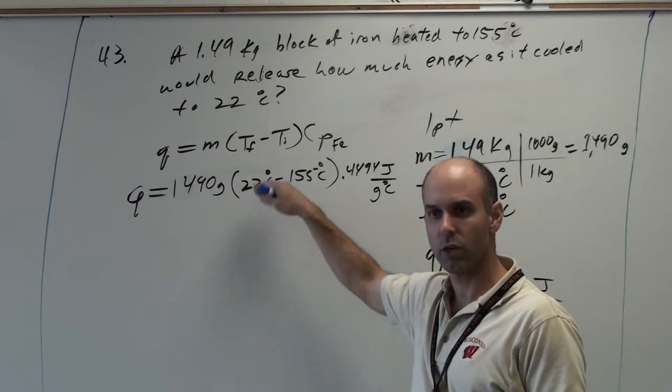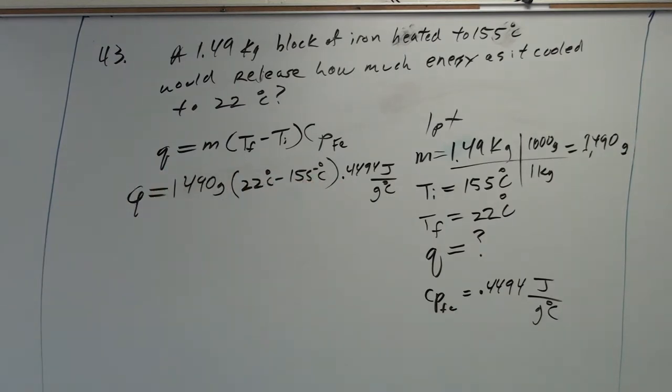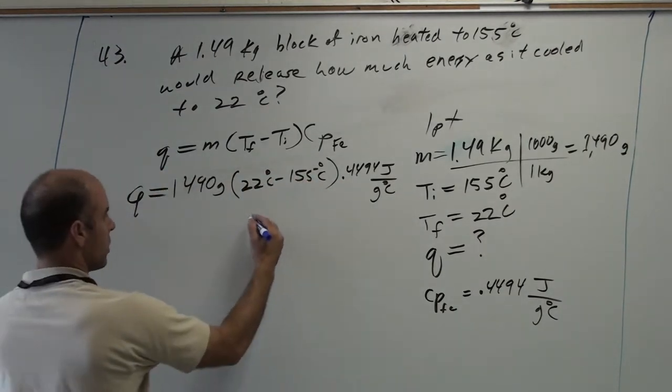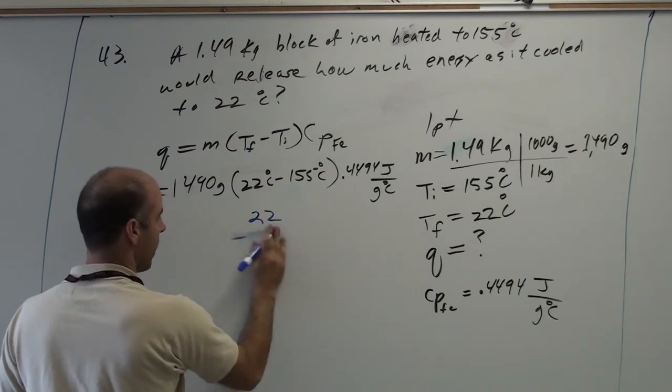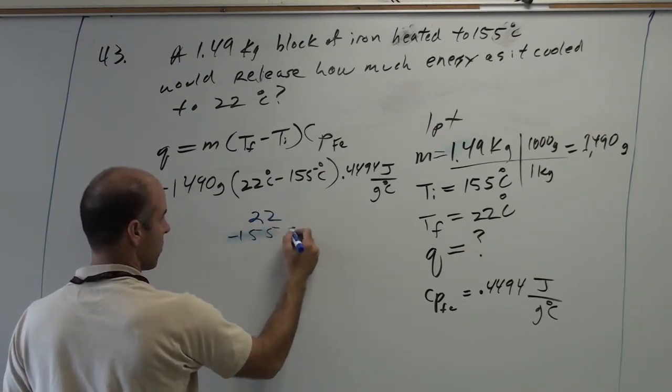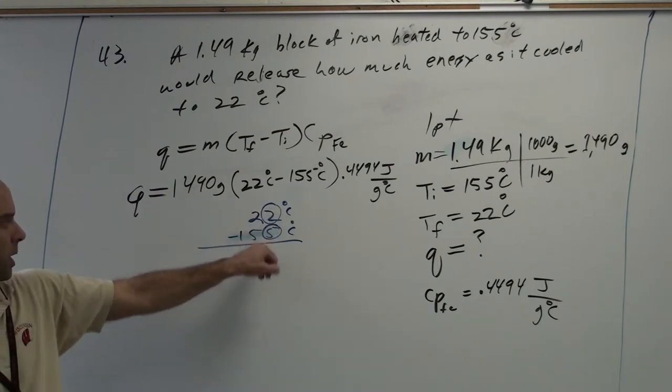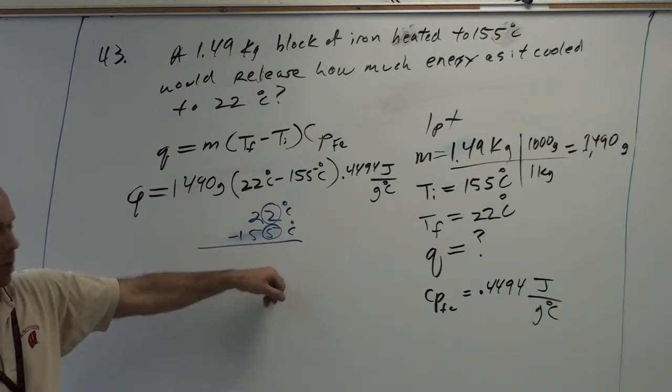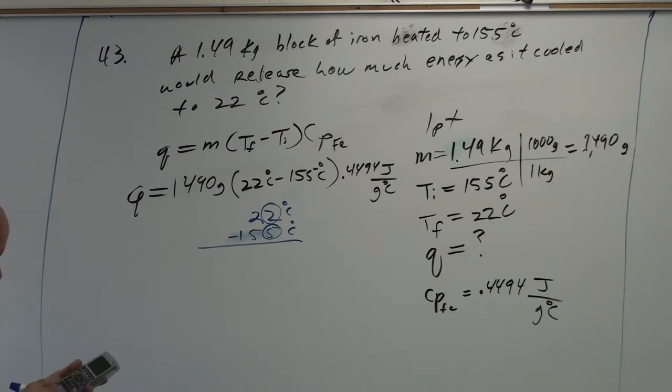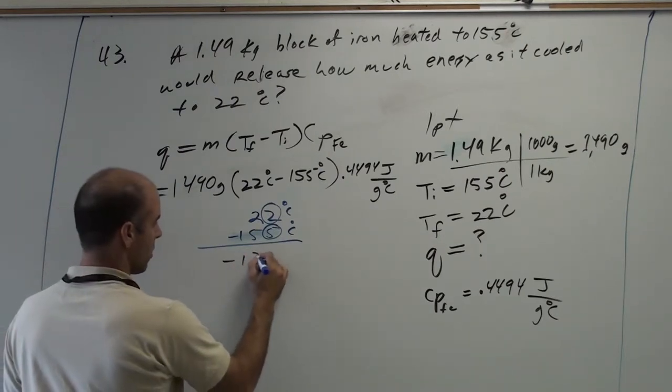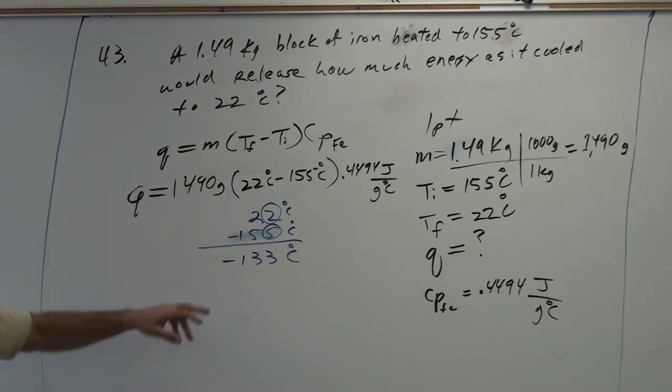Now, you do the subtraction. You stop. Then you do sig figs. So, I'm going to do twenty-two minus 155. So my guess is in the ones place. So I'm going to round to the ones. Do not lose your negative sign. That's a place where people commonly make mistakes. They lose that negative.